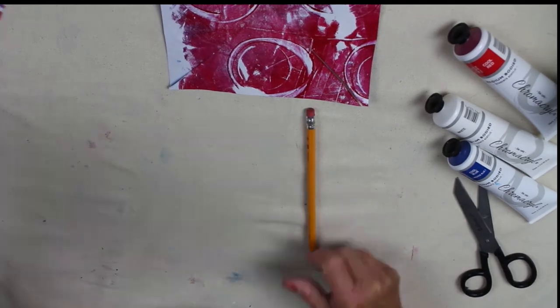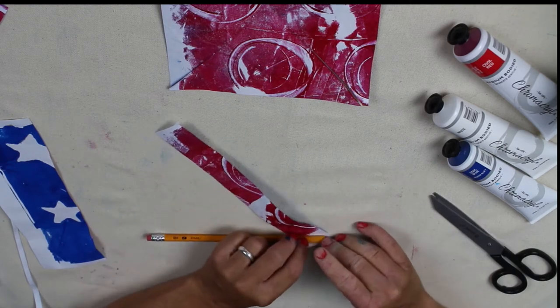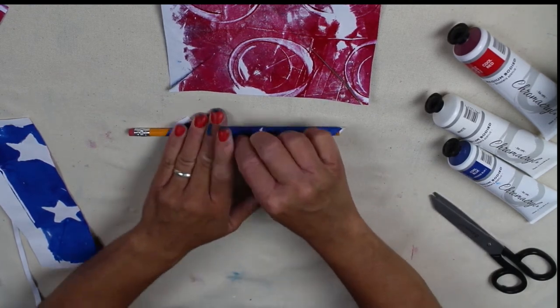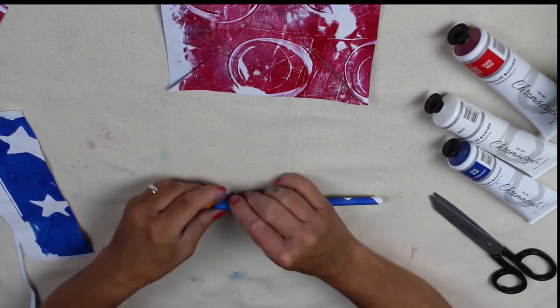Take your pencil and some of the remaining paper and roll it up. You want to cover up that edge and have a nice pretty pattern on that pencil. Secure with some tape.